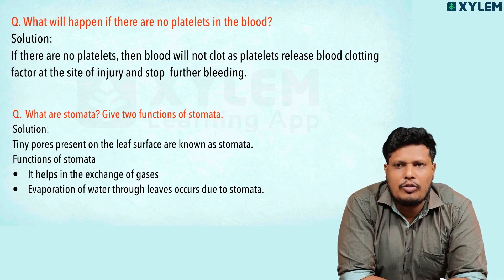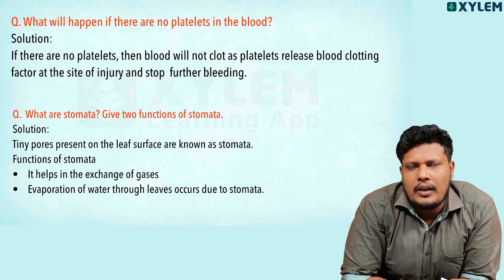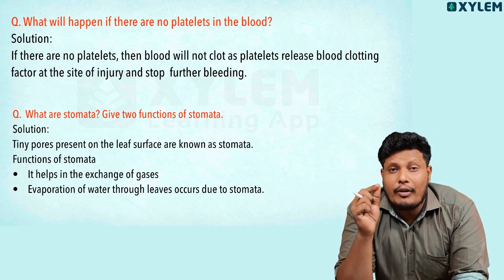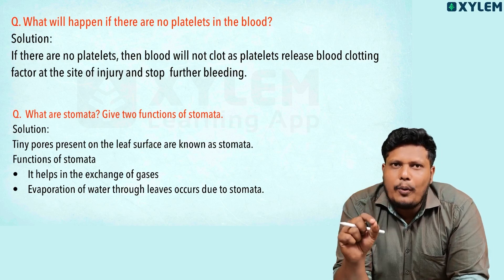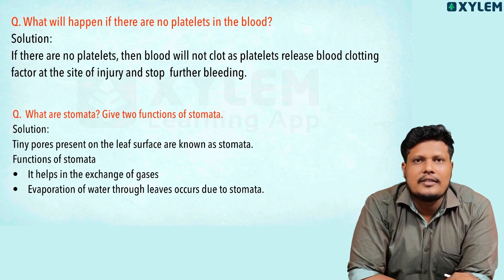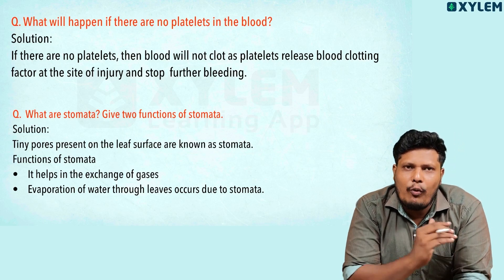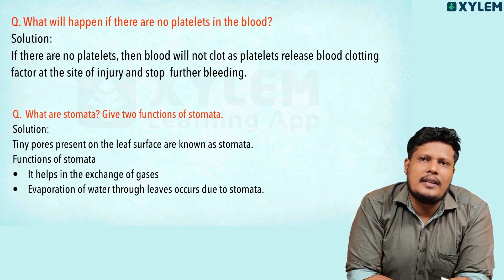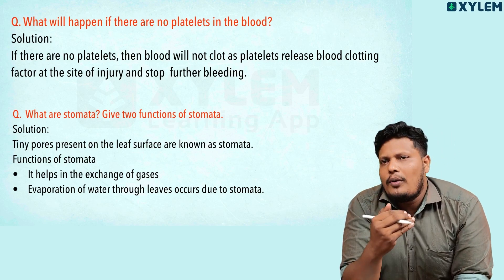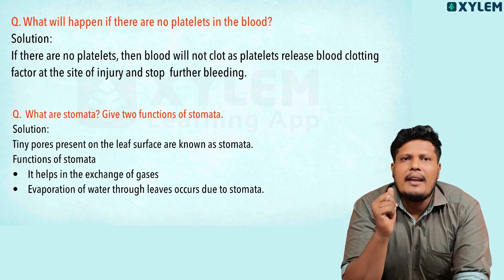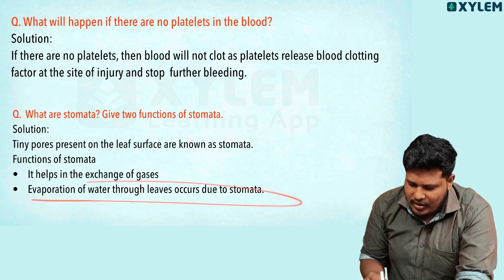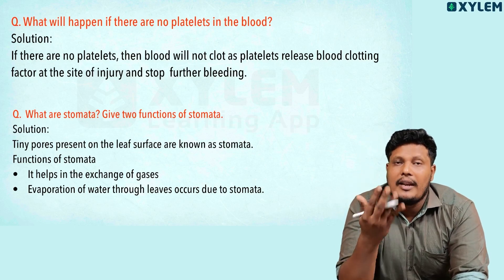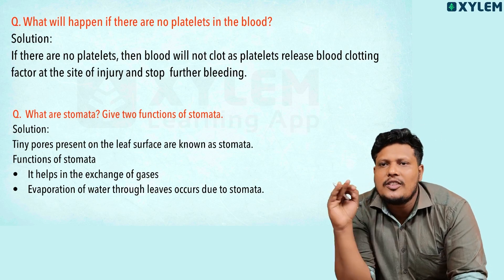What are stomata? Give two functions of stomata. If you observe the leaf surface, you can see very tiny pores. These tiny pores present on the leaf surface are known as stomata. They mainly help in the exchange of gases — oxygen and carbon dioxide — and also in the evaporation of water through leaves, which is the loss of water vapor from the aerial part of the plant through stomata.